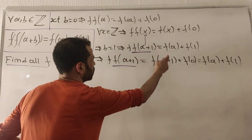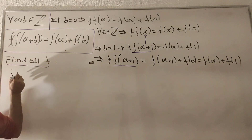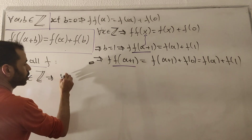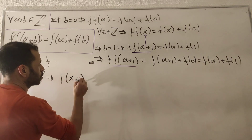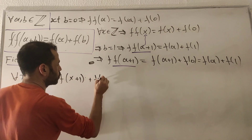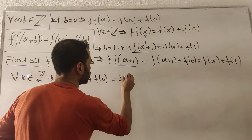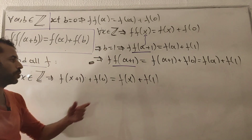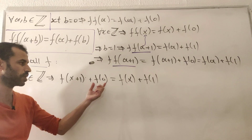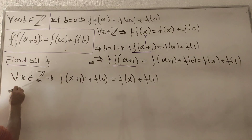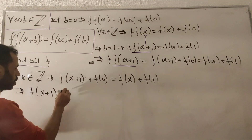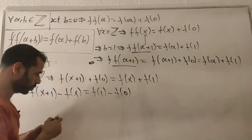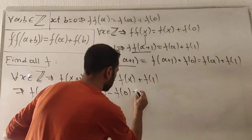Replacing a with x for all integers x, we get f(x+1) + f(0) = f(x) + f(1). Rearranging, f(x+1) - f(x) = f(1) - f(0). This tells us the difference between consecutive values of f is a constant.